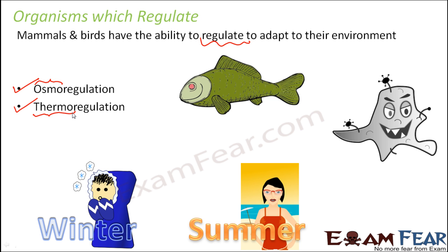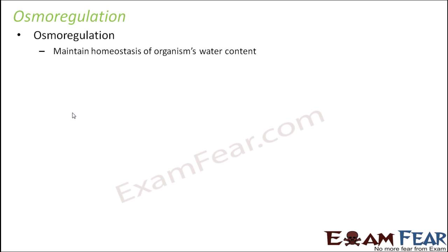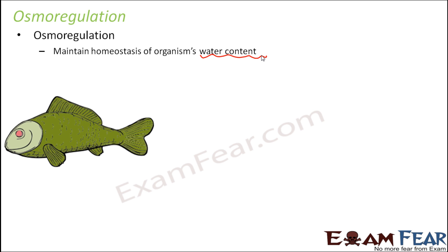Thermoregulation is all about maintaining a constant temperature within our body irrespective of changes in the external environment. The best example is the regulation of our body temperature during summers and winter — even though the external environment changes, our internal body temperature is still maintained at a constant value. Similarly, osmoregulation is about maintaining homeostasis of an organism's water content; the right amount of water is always maintained inside the body regardless of changes in external water concentration.